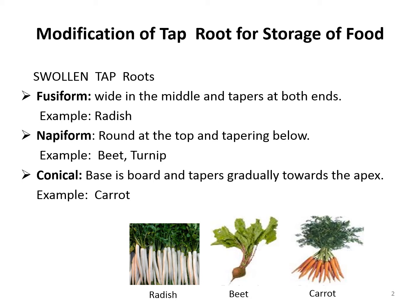The fusiform root is wide or broader in the middle and tapers at both ends, as seen in the picture. An example is radish. Another form is napiform, which is round at the top and tapering below. Examples are beet and turnip.